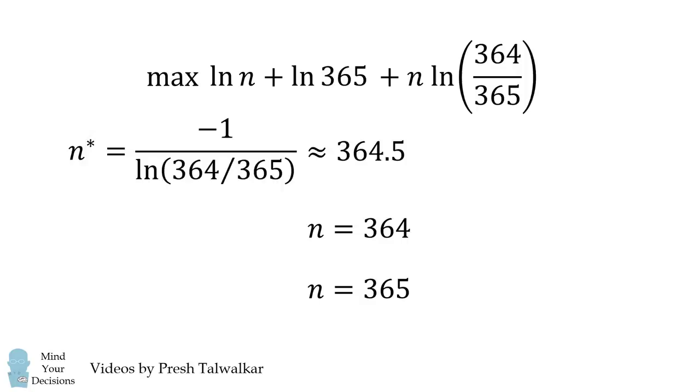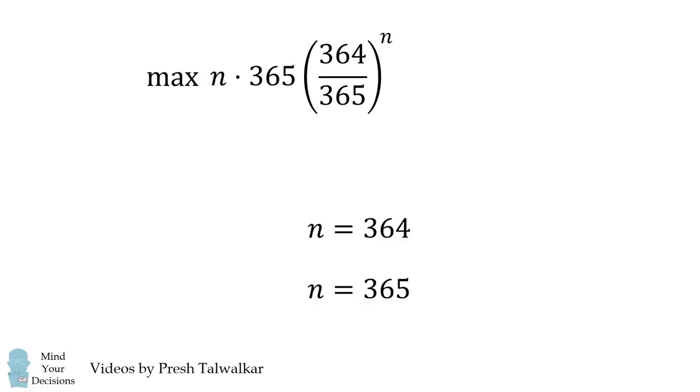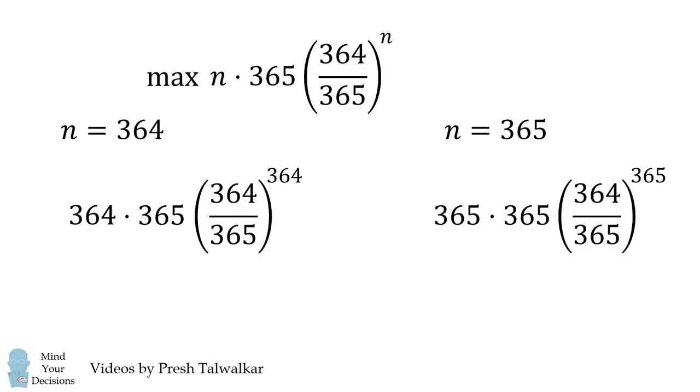We'll go back to the original form of the function that we wanted to maximize. We'll then substitute in N is equal to 364 and N is equal to 365. At first I thought these values were different, but thanks to some help at Math Stack Exchange, they showed me why these two are equal to each other.